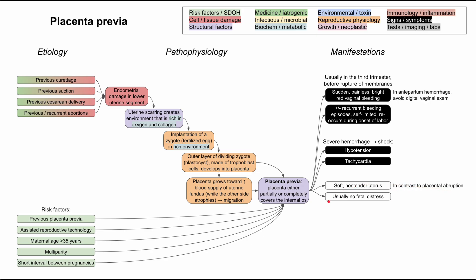Another pertinent negative is that the fetus does not have any distress. This is because the blood coming out in placenta previa is the mother's blood — the blood loss is maternal. This is not a guarantee; if mom loses so much blood that she becomes hypoxic and cannot deliver oxygen to the baby, you might see fetal distress. But in most cases, fetal distress will not be present because the blood lost through the placenta previa is mom's blood.